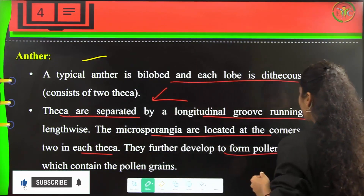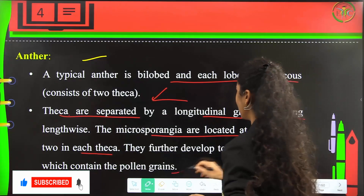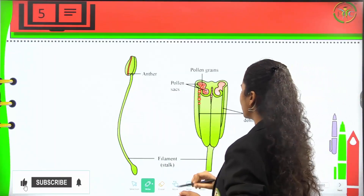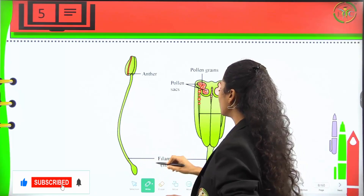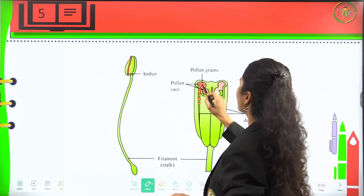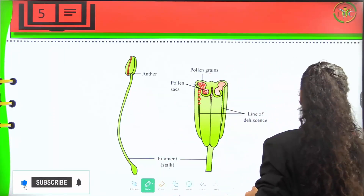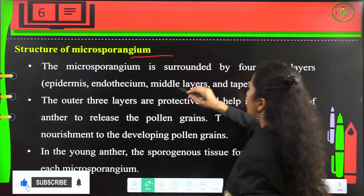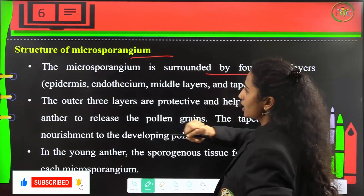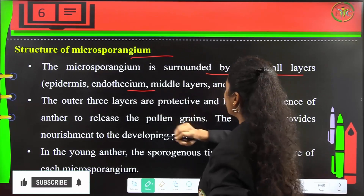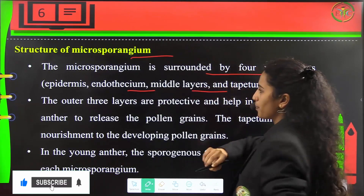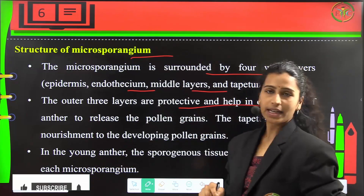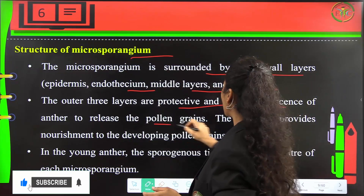The microsporangia are further going to develop into pollen sacs which contain the pollen grains. The filament is the stalk, and we have the anther, pollen sacs, pollen grains, and the line of dehiscence. The microsporangium is surrounded by four wall layers: epidermis, endothecium, middle layers, and the tapetum.